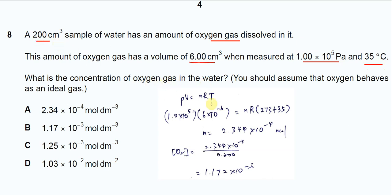First you need to find the moles of oxygen. So use the ideal gas combined gas law PV equal to nRT.